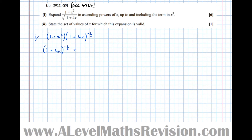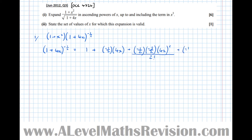So the first thing we do is expand (1 + 4x)^(−1/2) separately using the formula: 1 + n·(x term) + n(n−1)·(x term)² / 2! + n(n−1)(n−2)·(x term)³ / 3!, which equals 1...